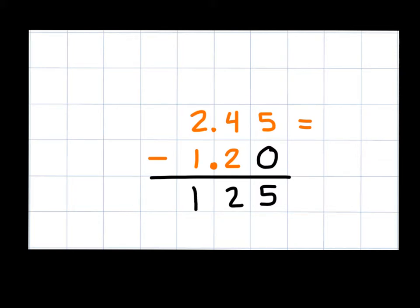Just like in adding of decimals, we are going to place our decimal in our answer based on where it falls in the two numbers that we are subtracting. So we're going to bring the decimal straight down, and this is going to give us our answer of 1 and 25 hundredths.